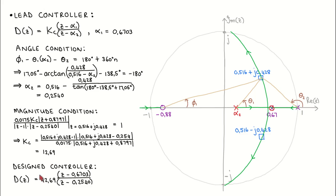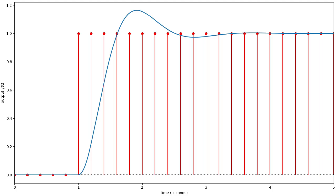The designed controller is therefore given by the transfer function shown here. Let's simulate the step response of this digital controller controlling the analog plant. The discrete time unit step reference input is shown in red, and the continuous time plant output is shown in blue. We can see that the overshoot is close to the required 16% and the settling time is close to the required 2 seconds or less. In practice, one would iteratively adjust the controller design until the specifications are met exactly.